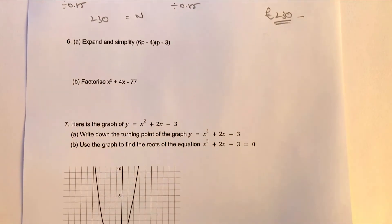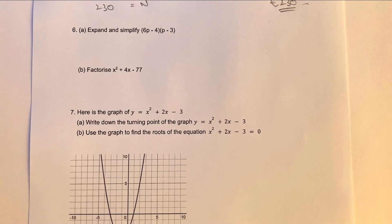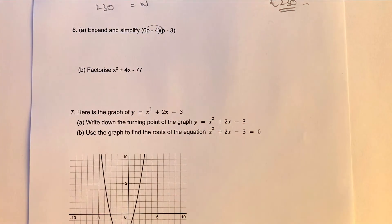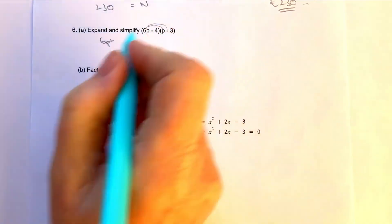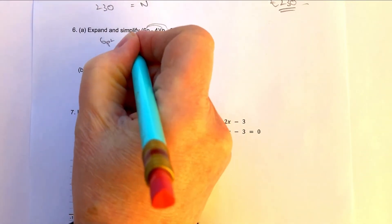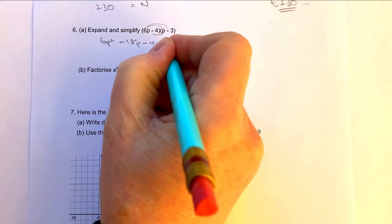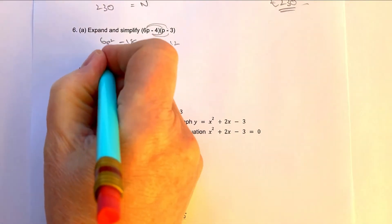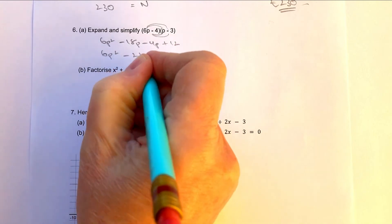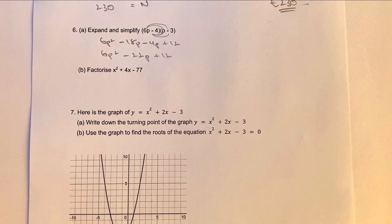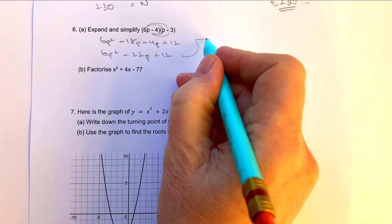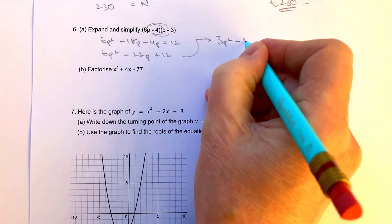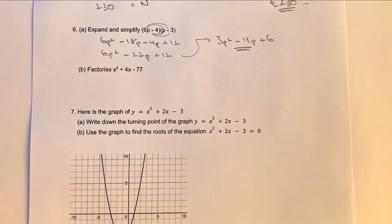Let's move on to question number six: expand and simplify. Using a crab claw method: 6p times p is 6p squared; 6p times minus 3 is minus 18p; minus 4p; and a minus times a minus gives plus 12. Tidying up gives 6p squared minus 22p plus 12. You can also simplify further by dividing through by 2 to get 3p squared minus 11p plus 6.